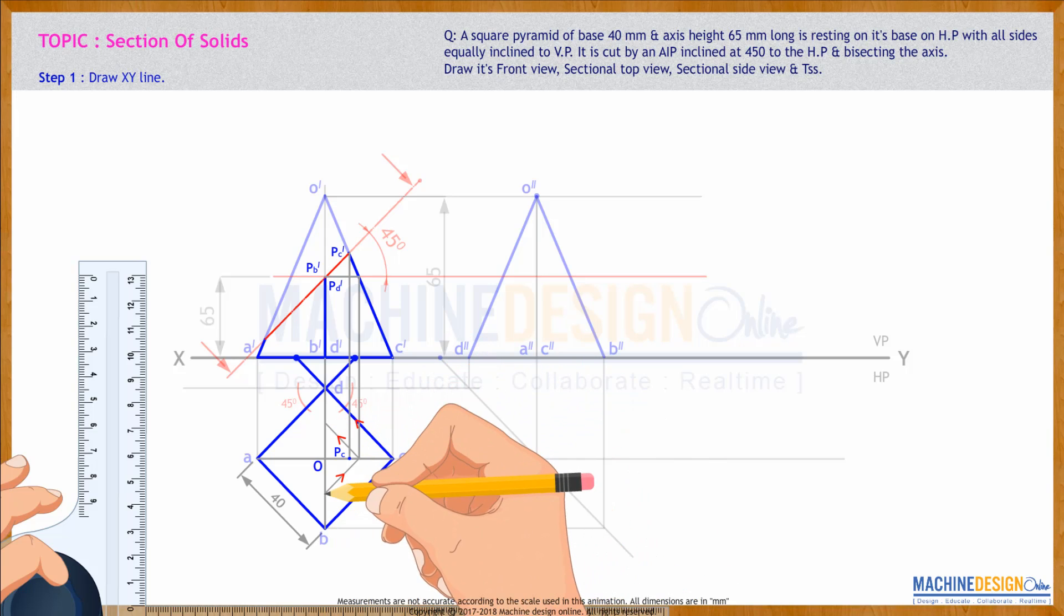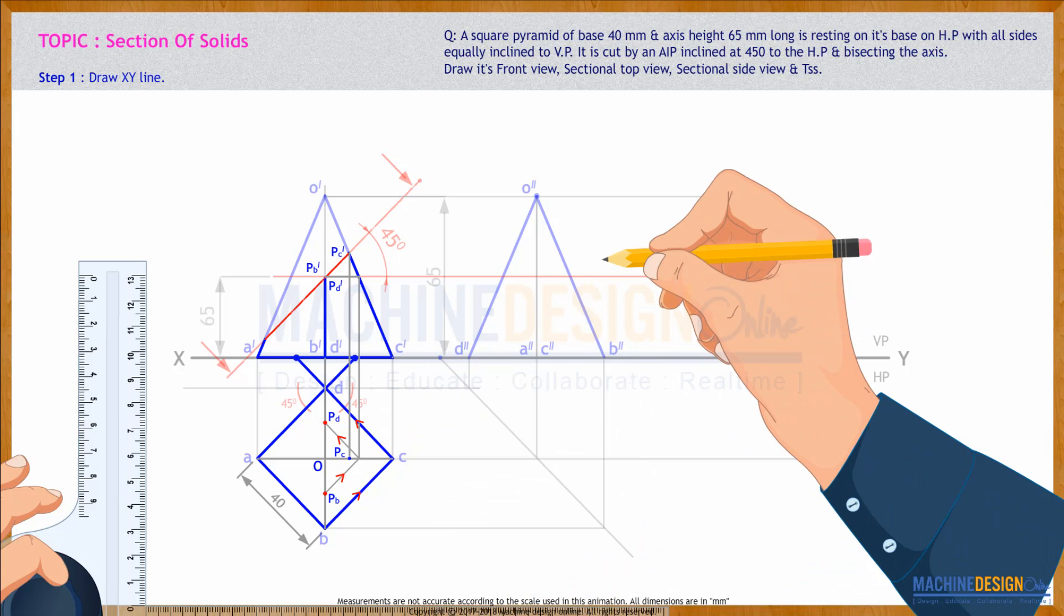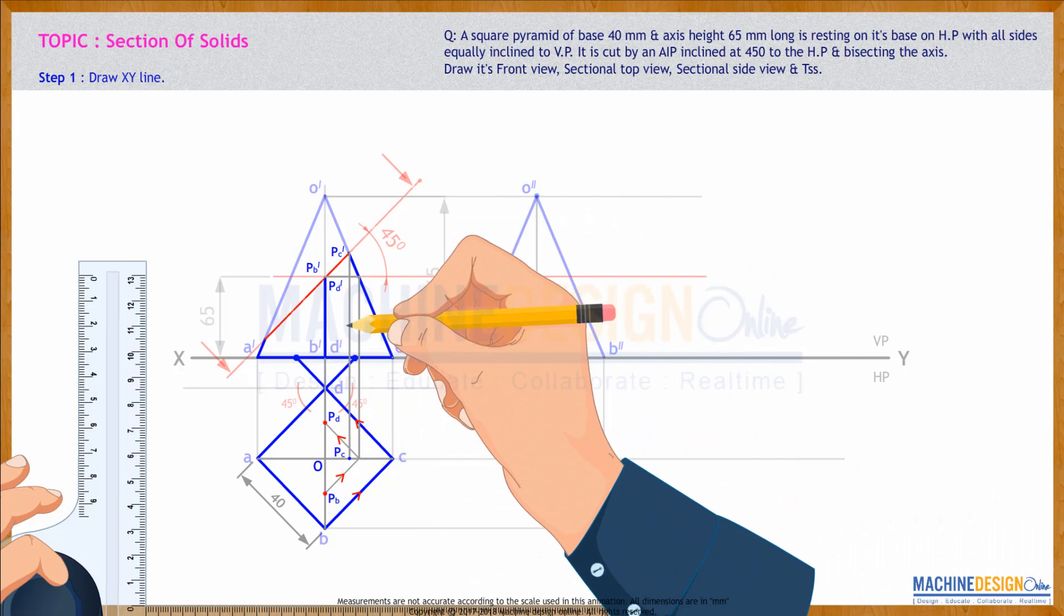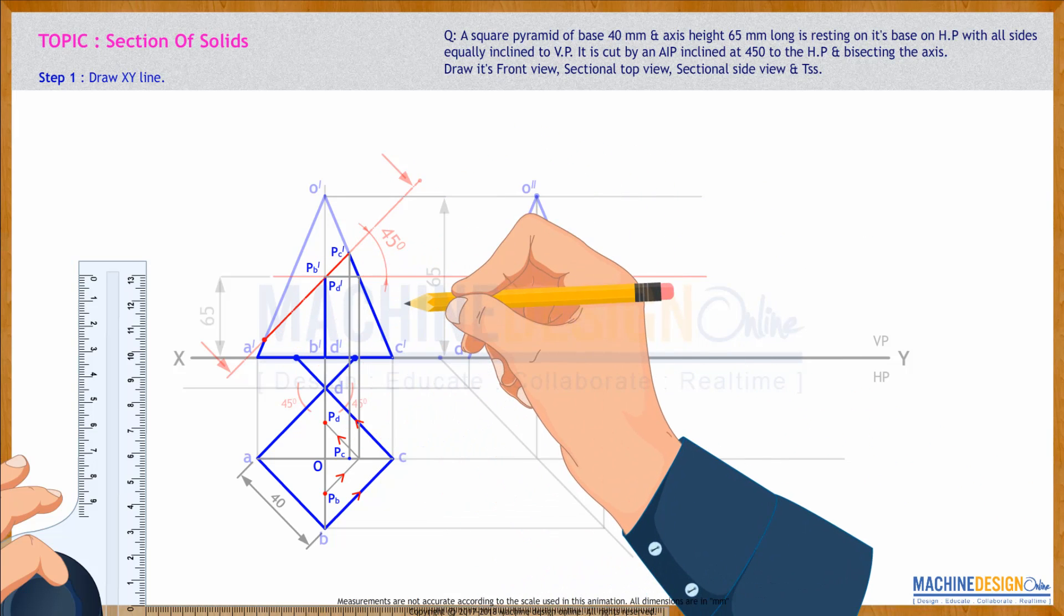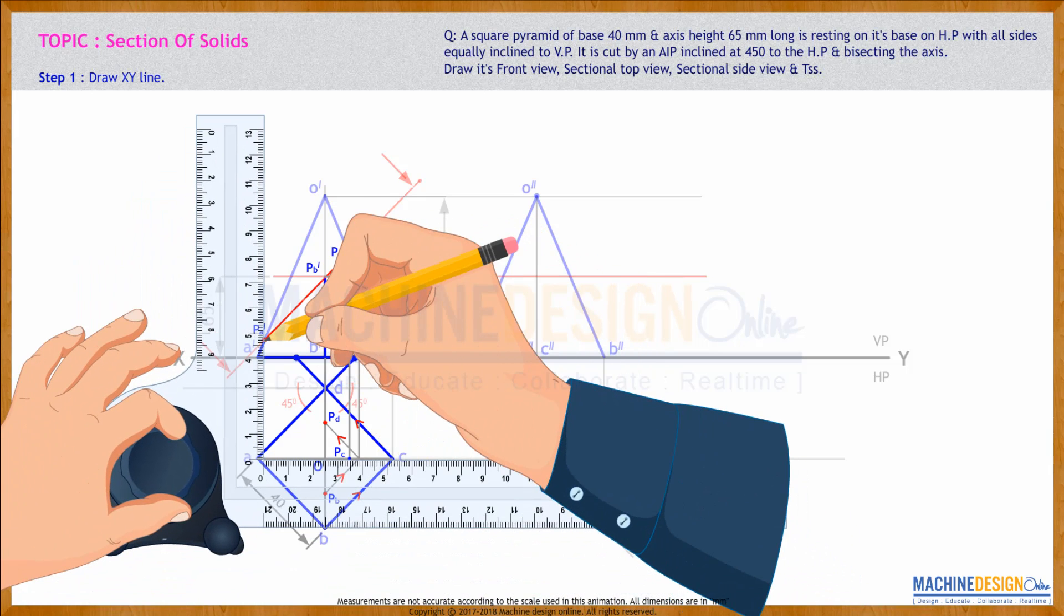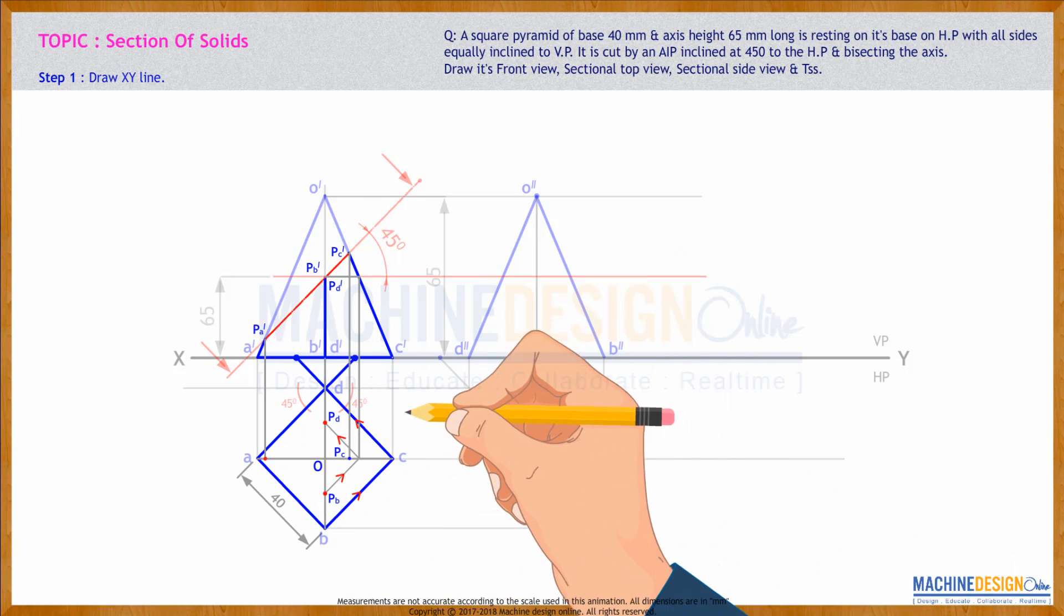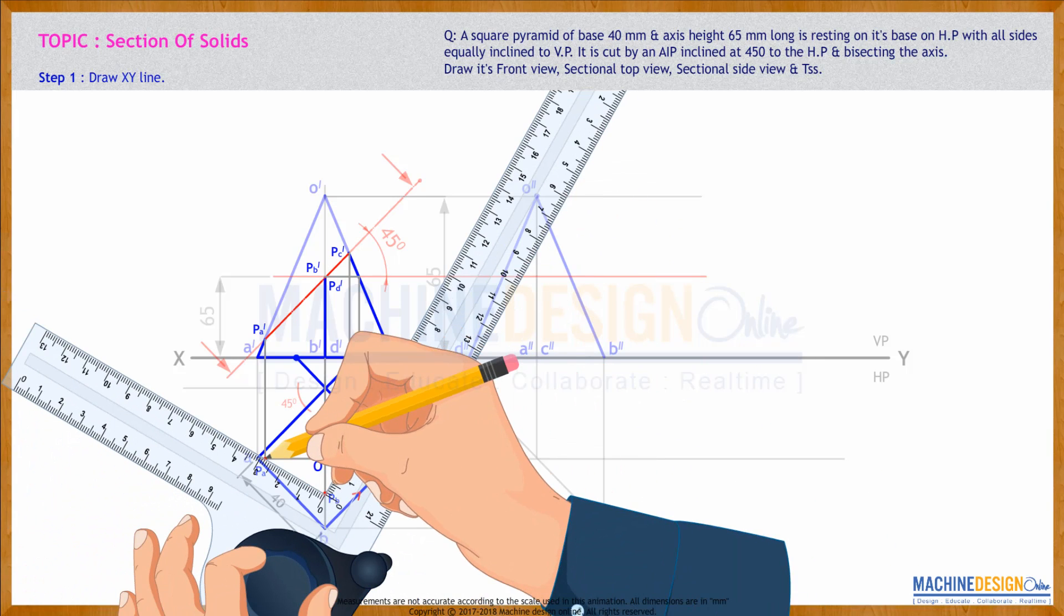So it will be on OC and from there parallel to base. So we got two points: PV and PD. Now if you see here, O dash A dash, so this is point PA dash. Now you project point PA dash straight down, wherever it will cut, that is point PA.